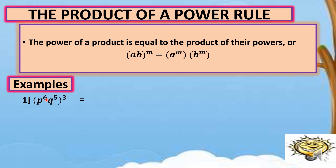Example number one: we have quantity p raised to 6, q raised to 5, raised to 3. So, 3 here will be used to multiply to the exponents of p and q. We can write this as p raised to 6 times 3, and q raised to 5 times 3. So, multiplying the exponents: 6 times 3 is 18, and 5 times 3 is 15. Our final answer is p raised to 18, q raised to 15.